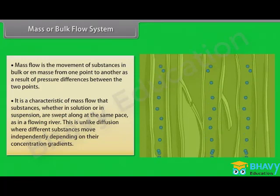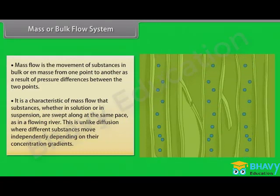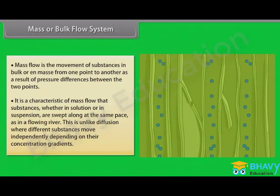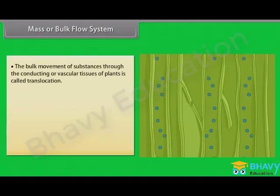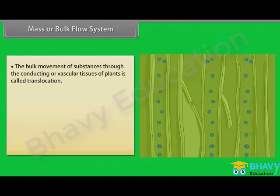This is unlike diffusion, where different substances move independently depending on their concentration gradients. Bulk flow can be achieved either through a positive hydrostatic pressure gradient — for example, a garden hose — or a negative hydrostatic pressure gradient — for example, suction through a straw. The bulk movement of substances through the conducting or vascular tissues of plants is called translocation.